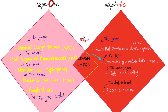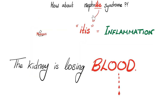The nephritic syndromes include acute post-streptococcal glomerulonephritis, rapidly progressive (crescentic) glomerulonephritis, IgA nephropathy, Alport syndrome, diffuse proliferative glomerulonephritis, and membranoproliferative glomerulonephritis. It's 'itis' — inflammation: redness, hotness, swelling, pain, loss of function. The kidney is inflamed and shedding tears of blood.